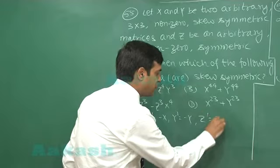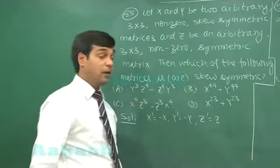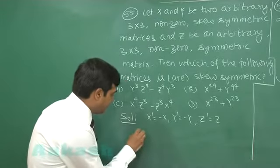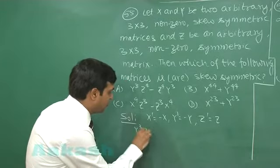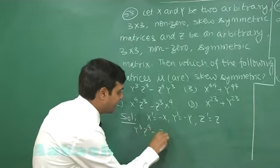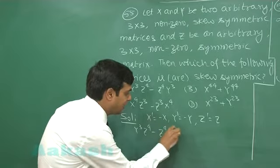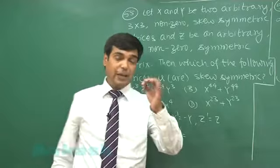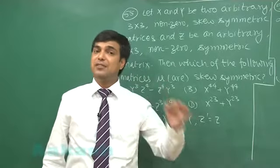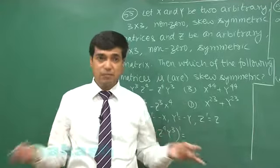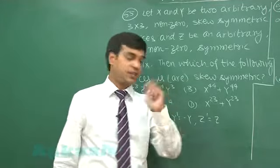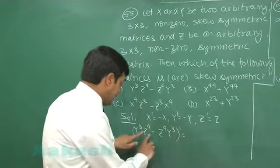We have to check about these four. Let us start with the first one: Y³Z⁴ minus Z⁴Y³ whole transpose. When we talk about (A + B) transpose, it is A transpose plus B transpose, simple distribution. When we go over product, it follows reversal law.